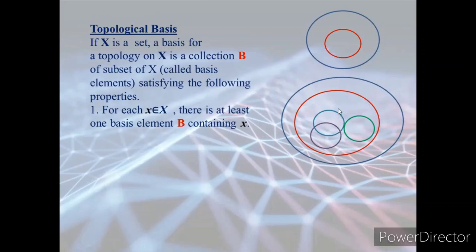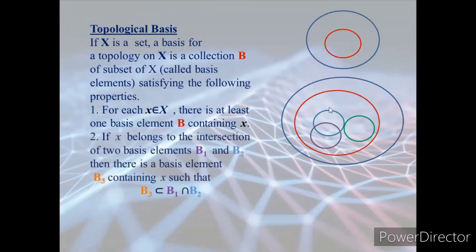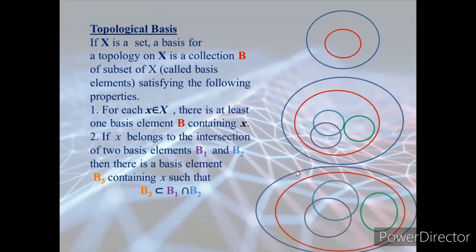Condition 2: if x belongs to the intersection of two basis elements B1 and B2, then there is a basis element B3 containing x such that B3 is a subset of that intersection. So if two basis sets overlap and x is in that intersection, there must be another basis element around x contained within the intersection.